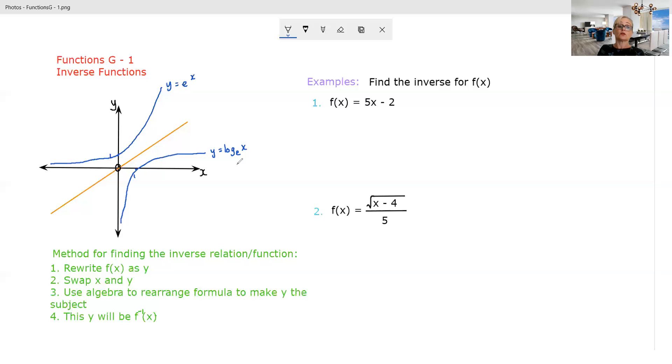Whether I were to do this function first and then do this, or do this function first and then take natural log of it, I would just get x. So that is an example of one pair of inverse functions.